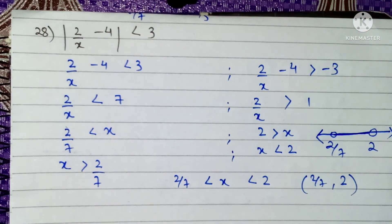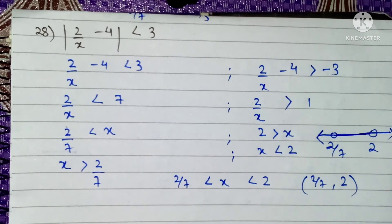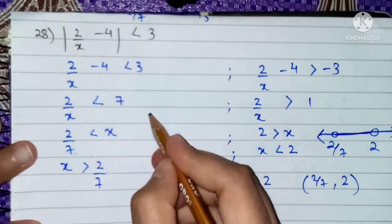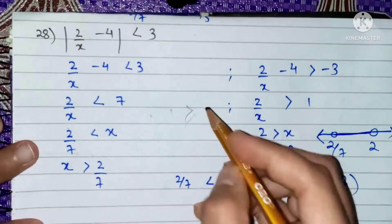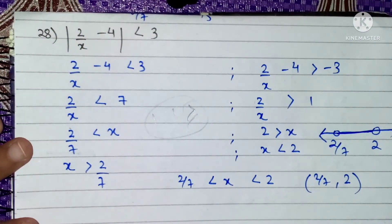The questions we have done so far produce single intervals. Now we move to questions that produce a union of intervals — when the mod is greater than or greater than equal, we make a union of intervals instead of a single interval.